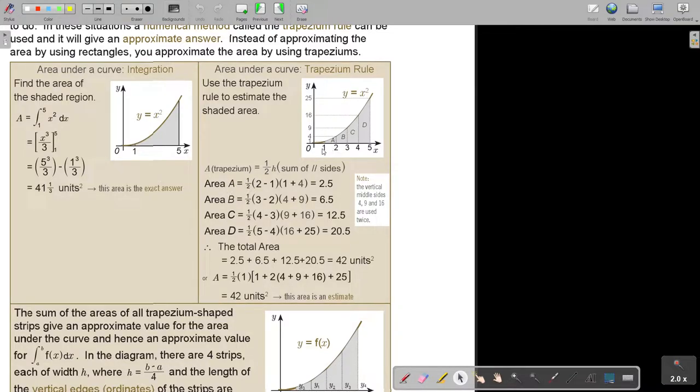So let's break it up. For trapezium A, it's a half times two minus one, that is your height, and your parallel sides is two and one. Area of B is three minus two times the parallel sides. Take note I'm repeating this side twice. For C and D, I continue the same pattern with the parallel sides.